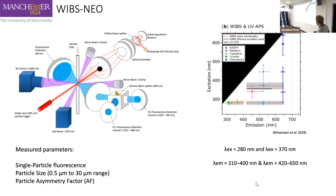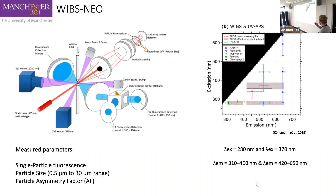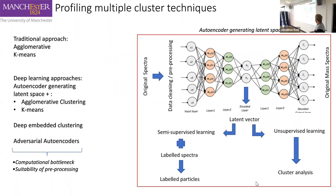Before getting into how we've manipulated the data, I want to tell you what metrics we're looking at. This is the WIBS-NEO, the Wideband Integrated Bioaerosol Sensor. The measured parameters are single particle fluorescence with a particle size range from 0.5 to 30 microns, and the particle asymmetry factor, which is a measure of asphericity taken from a quadrant detector. It excites over two wavebands from 280 to 370 nanometres, with emissions of 310 to 400 and 426 to 650 nanometres, largely corresponding to amino acids such as tryptophan or riboflavin, which fluoresce and give us our fluorescence signature.